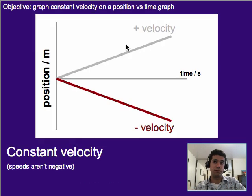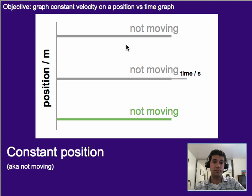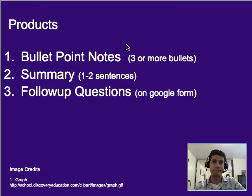That's it. So just to recap, velocities or constant velocities or speeds have slopes of not zero, whereas something that's not moving has a slope of zero for a position graph. That's it for this one. Three bullet points worth of notes, a one to two sentence summary, and make sure you do your questions on the Google form. Thank you.